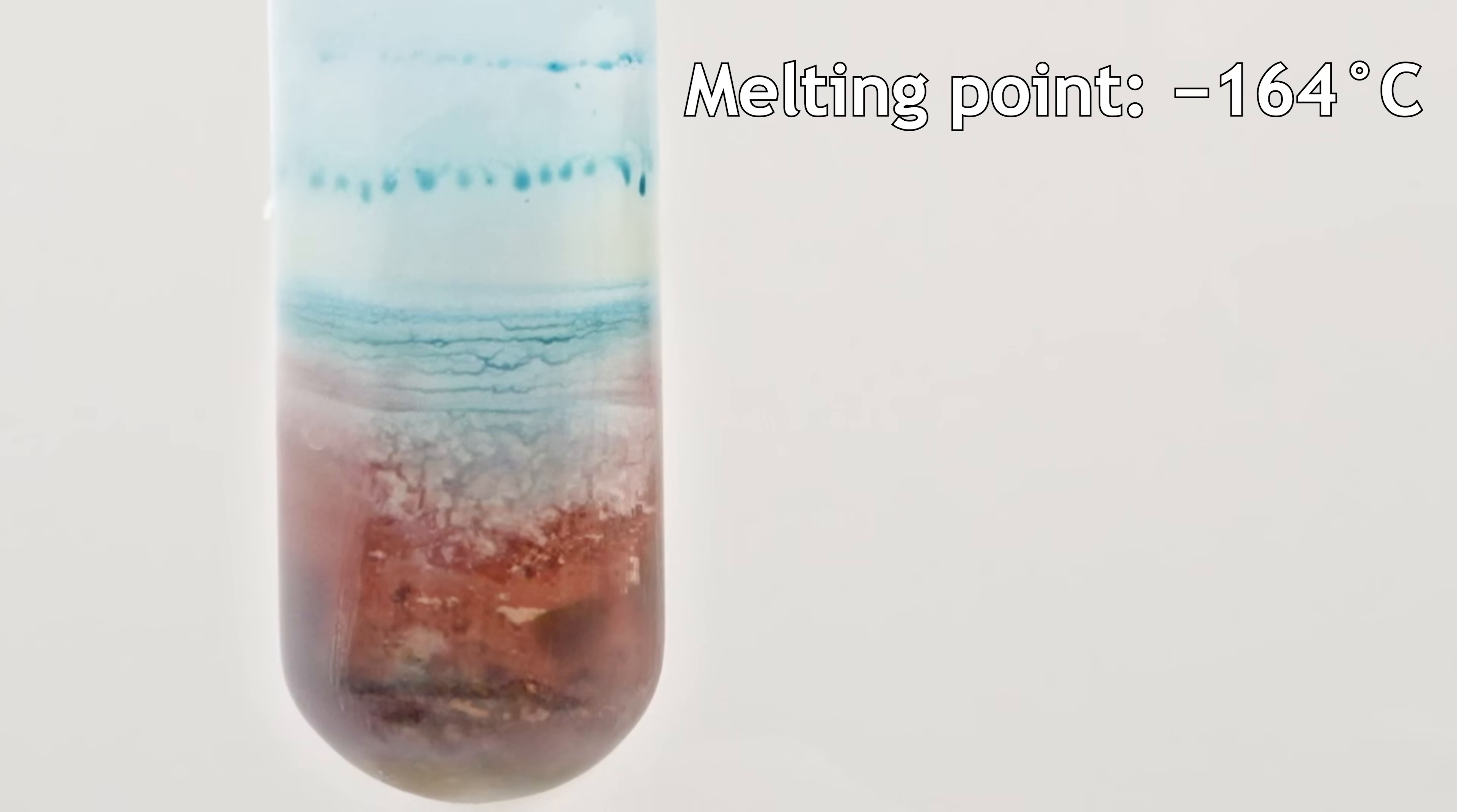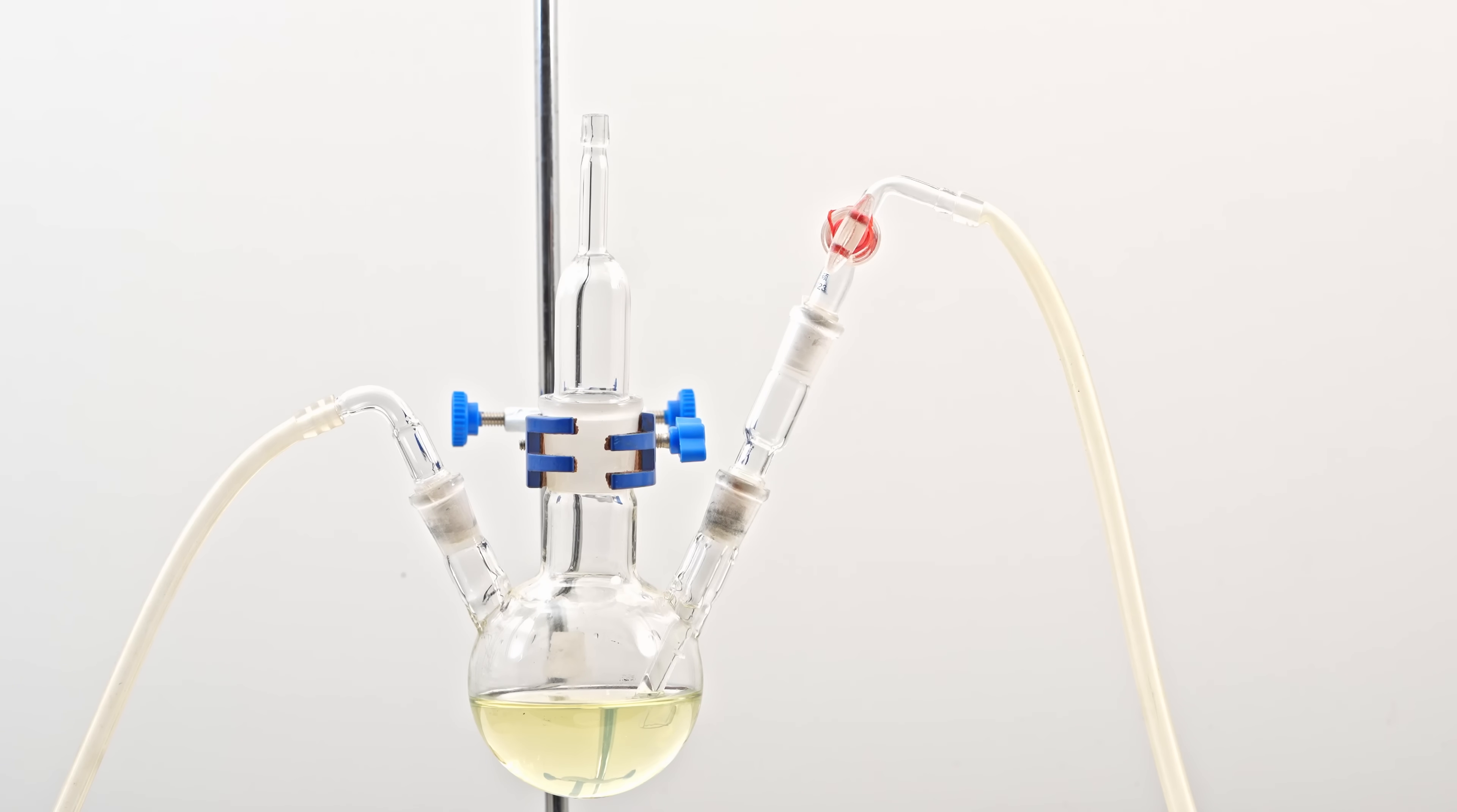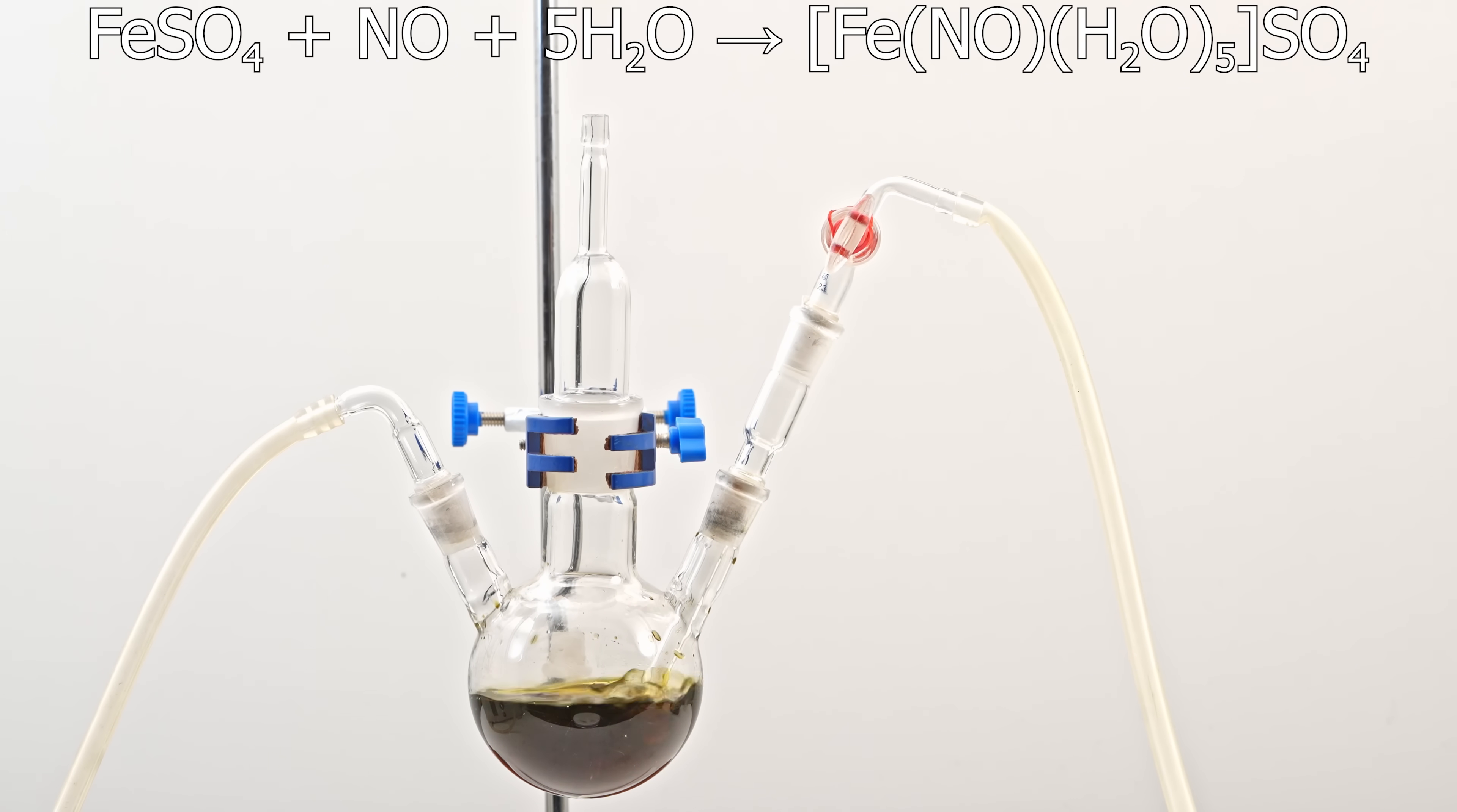The next reaction is qualitative for nitric oxide. In this three-necked flask, I've prepared a solution of iron sulfate, which oxidizes quickly in air. To prevent this, I keep an argon stream flowing through the flask. I introduced nitrogen monoxide through the right neck of the flask, bubbling it through the solution. The reaction involves aqueous iron sulfate absorbing nitrogen monoxide to form a brown nitrosyl iron sulfate solution.